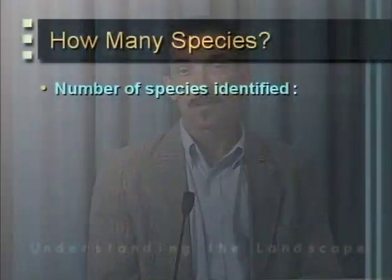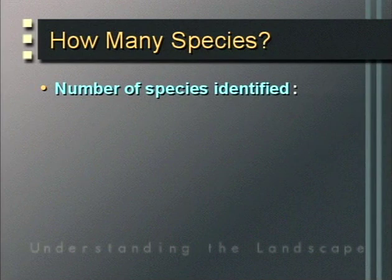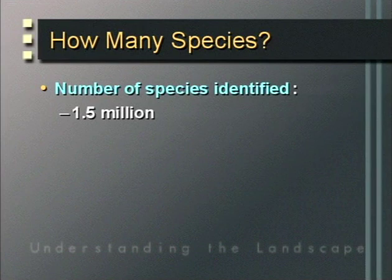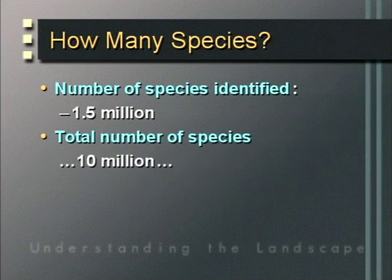We will use species richness as a common currency to gauge the condition of communities and landscapes — simply defined as the number of species in a particular site. Estimates of the number of species worldwide are highly variable: approximately 1.5 million living species have been identified, and estimates of total living species range from 10 million to as high as 100 million. These estimates are based on the rate at which new species are identified.